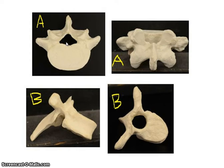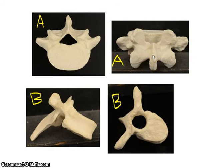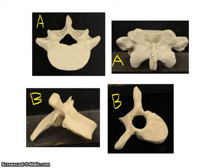The lumbar vertebra has a much wider, more rectangular body. The vertebral foramen is more triangular rather than round. Looking from the back, the spinous process is short and stubby and points straight out — it does not come down. That's how you tell the difference between thoracic and lumbar vertebrae. Remember your numbers: 7 cervical, 12 thoracic, and 5 lumbar.